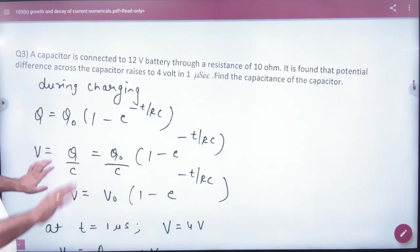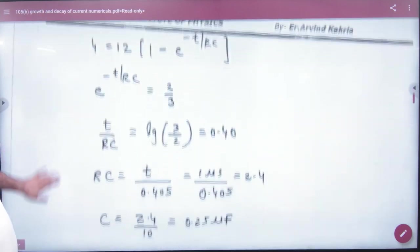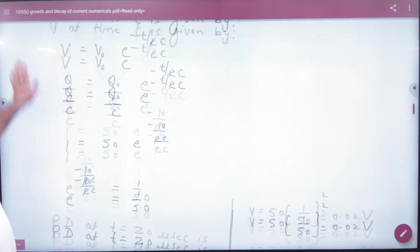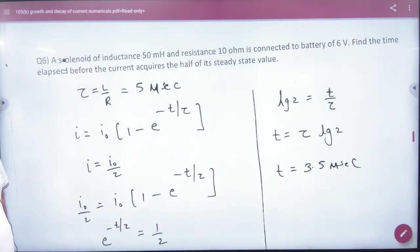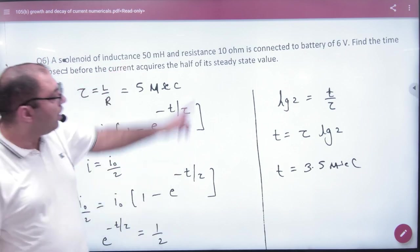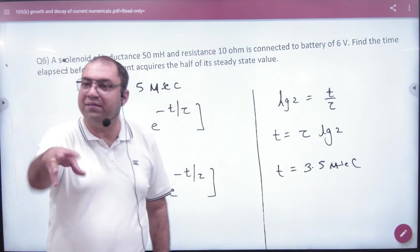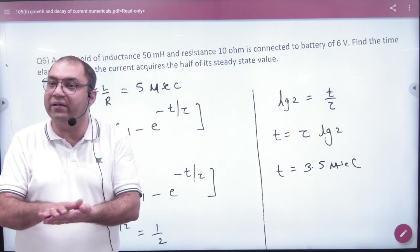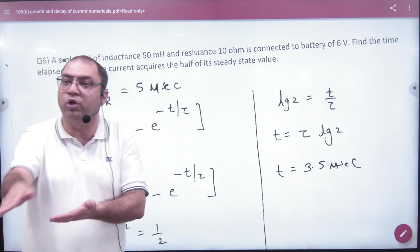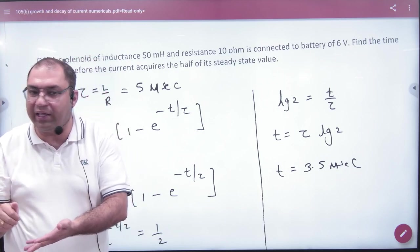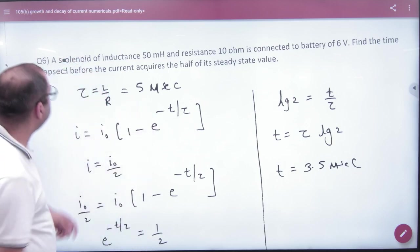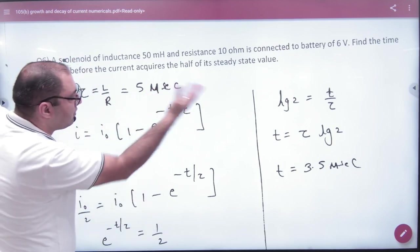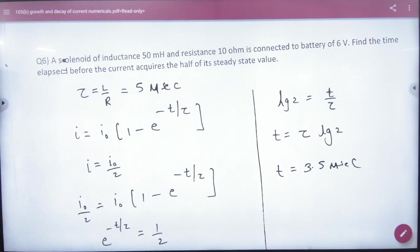This is for our non-medical people. The first question is that we will start with this question. There is a solenoid with inductor L and resistor R. It has been connected with the battery. Then the question is about the growth of the current, not decay. The battery is removed for decay. Find time elapsed before the current acquires half of its steady value.